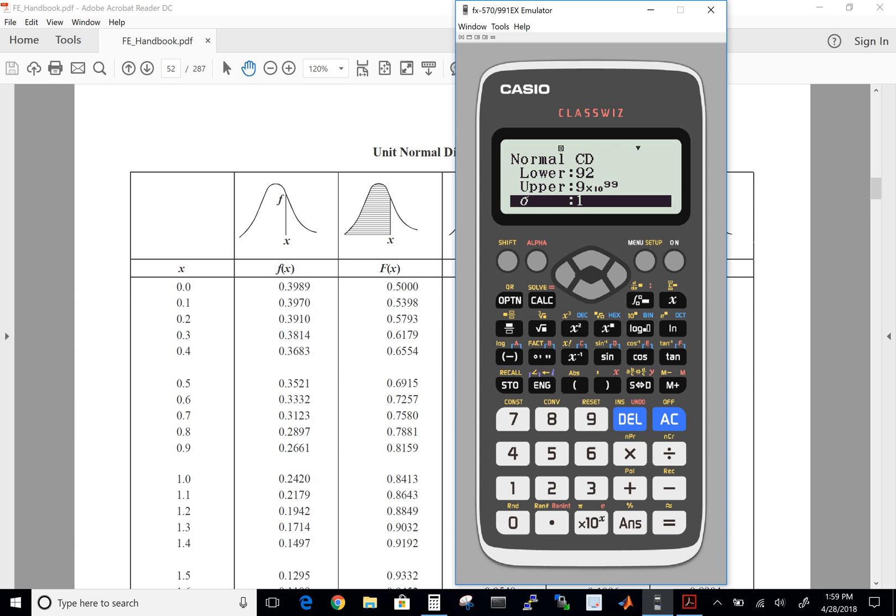The standard deviation, if you recall, was 6, and the mean was 83. And if we hit enter twice, we get the same probability that we just got, which is 0.0668, and we rounded it up to 0.067.